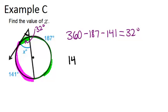We know that the bigger arc, 141, minus the smaller arc, which is 32, divided by 2, will equal our angle x.